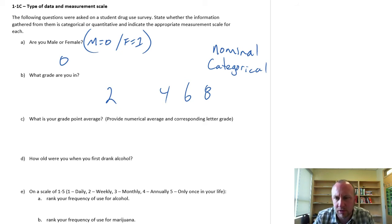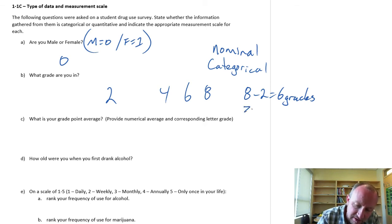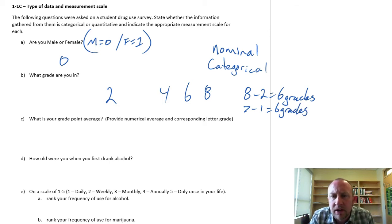Is the interval matter? Well, yeah. If I look at 8 minus 2, that's 6 grades difference. That's the same as if I were to compare grade 7 and grade 1. That's also 6 grades. And 6 grades is 6 grades. It's the same across the possible answers. So it could definitely be an interval.